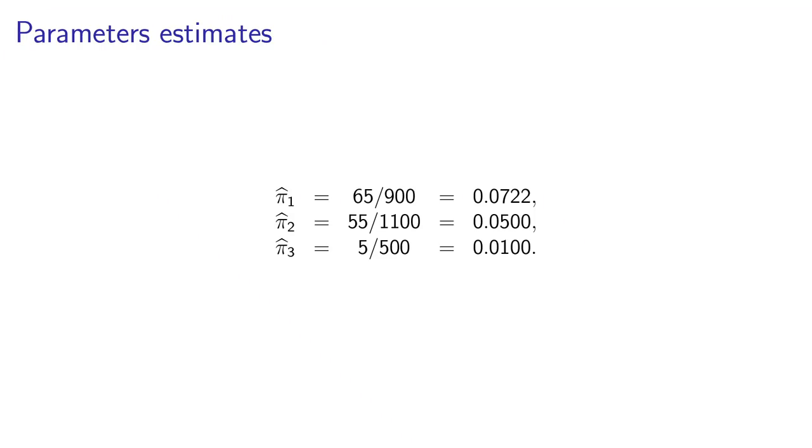These are the three values of the parameters that we have estimated from the contingency table. For example, pi hat 1 is 65 divided by 900. 65 is the number of people who own an electric car and belong to the first age category, and 900 is the total number of people who belong to age category 1. So it is about 7.22%. And we do the same for the next two parameters.